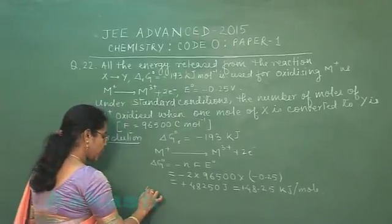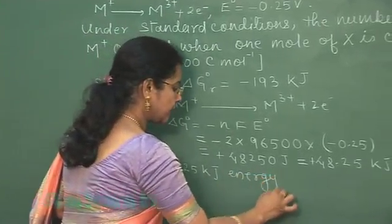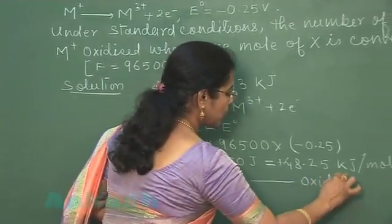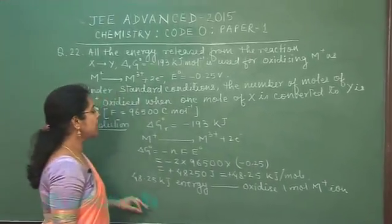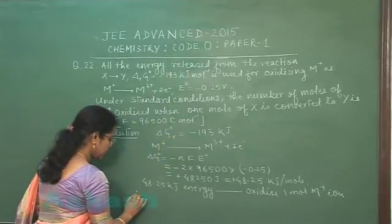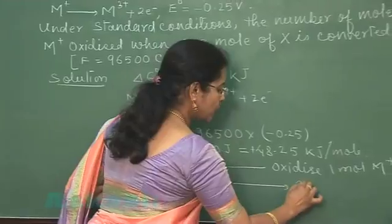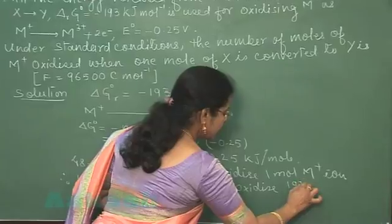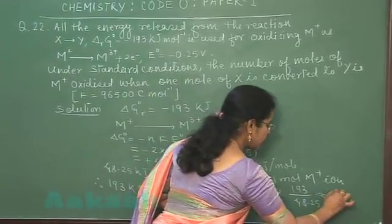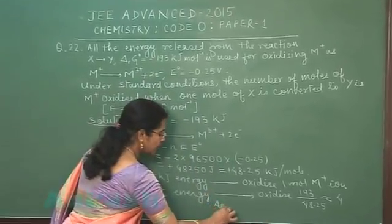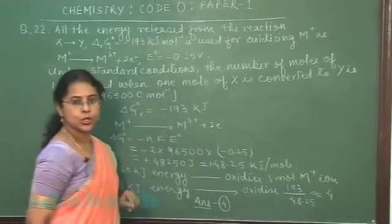It means 48.25 kilojoule energy is sufficient to oxidize 1 mole M positive ion. The free energy of the given reaction is 193. So 193 kilojoule energy will be used to oxidize 193 by 48.25, this is approximately equal to 4 moles. It means the given energy can be used to oxidize 4 moles of M positive ion. So the answer of this question should be 4.